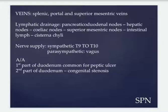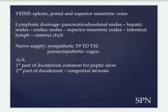Venous drainage is by the splenic veins, portal veins, and mesenteric veins — same as the duodenum and pancreas. Lymphatic drainage passes from the pancreaticoduodenal nodes, then to the hepatic nodes, then celiac nodes, and enters into the superior mesenteric nodes via intestinal lymph, then enters into the cisterna chyli.